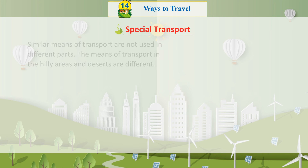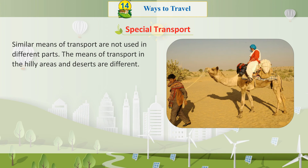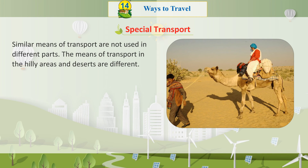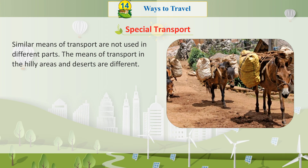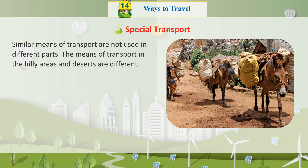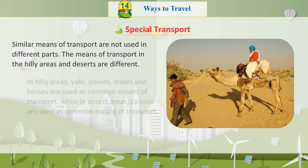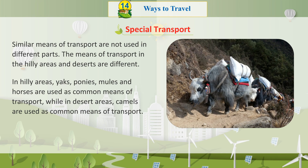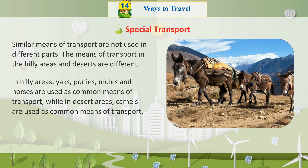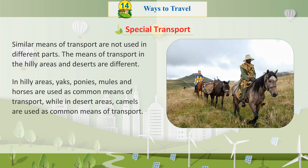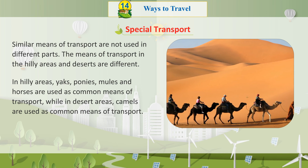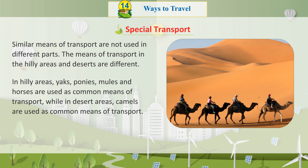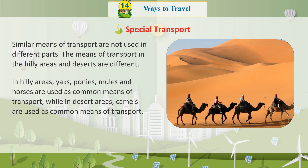Special transport. Similar means of transport are not used in different parts of the world. The means of transport in hilly areas and deserts are different. In hilly areas, yaks, ponies, mules, and horses are used as common means of transport. While in desert areas, camels are used as a common means of transport.